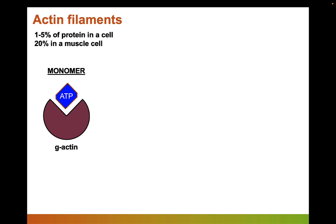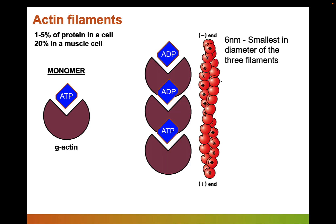The first one we'll talk about are actin filaments. Actin makes up about one to five percent of all total protein in a cell, and about twenty percent of all protein in a muscle cell. The individual monomer is called G-actin, for globular actin. Actin binds to ATP, and the ATP is important for its ability to polymerize into a filament — sometimes called F-actin, or filamentous actin. Each monomer attaches to the next, and the ATP is gradually hydrolyzed, so there's more ADP at the older end.